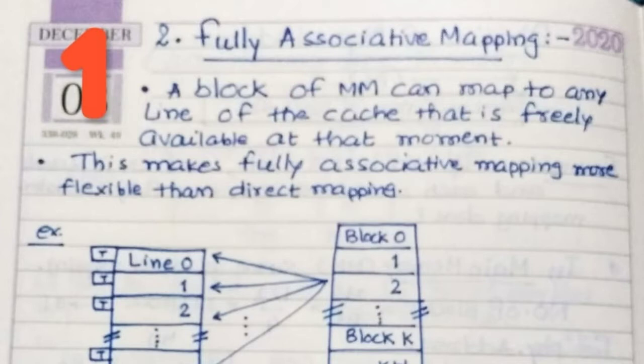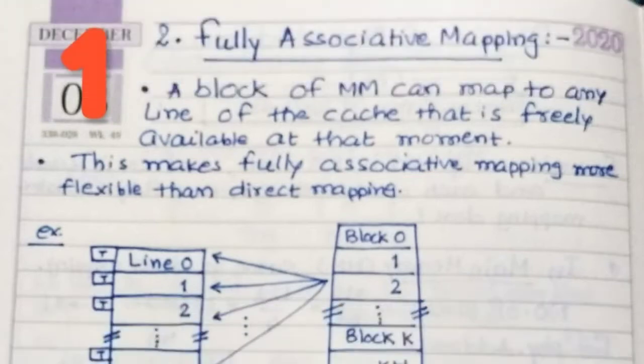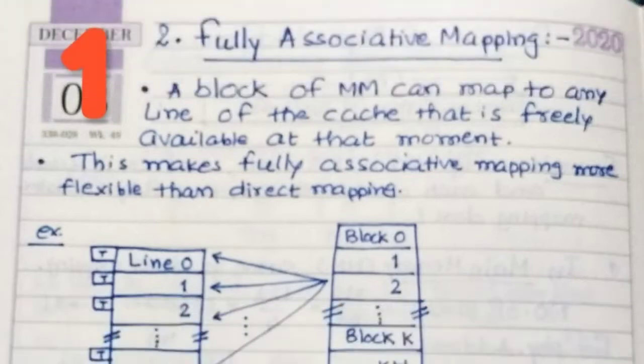Today we learn about fully associative mapping, its advantages and disadvantages. The process will be explained by examples. A block of main memory can map to any line of the cache that is freely available at that moment. This makes fully associative mapping more flexible than direct mapping.